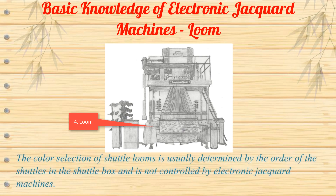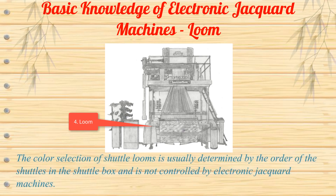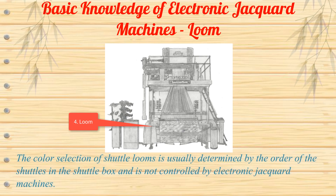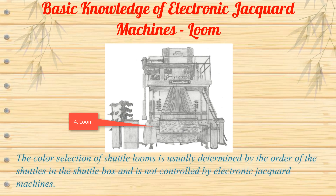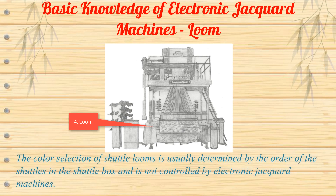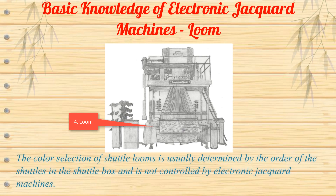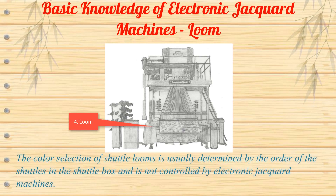The color selection of shuttle looms is usually determined by the order of the shuttles in the shuttle box and is not controlled by the electronic jacquard machine.